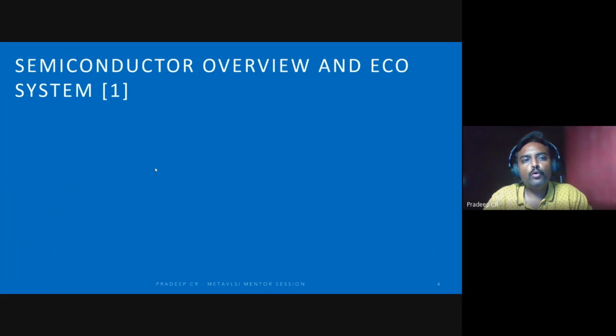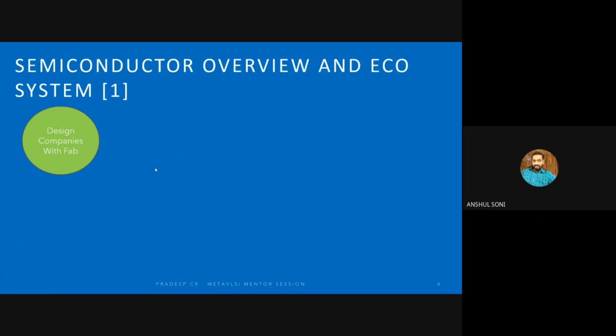Coming to semiconductor overview and ecosystem - semiconductor is not just one part actually. You have many parts of it. For example, you need to have design companies with fabrication. Can you give us some examples - which design companies you know which has fabrication technology with them? Samsung, okay good. Intel, okay.